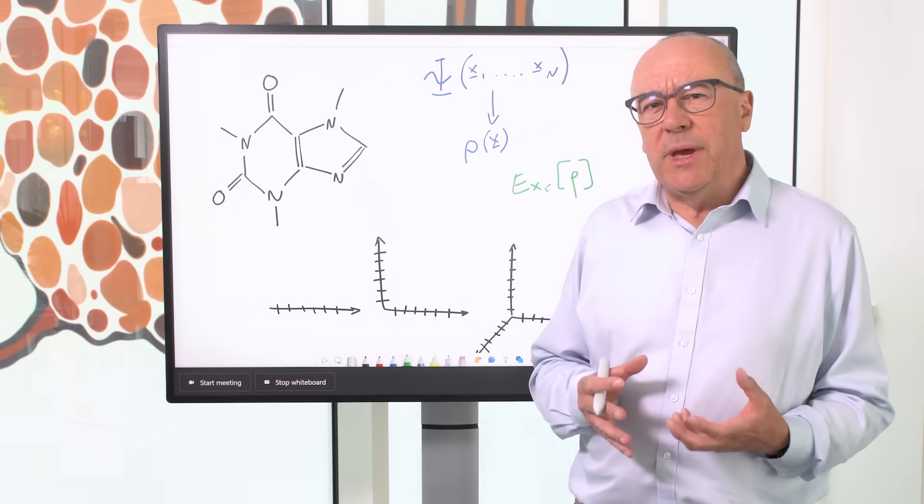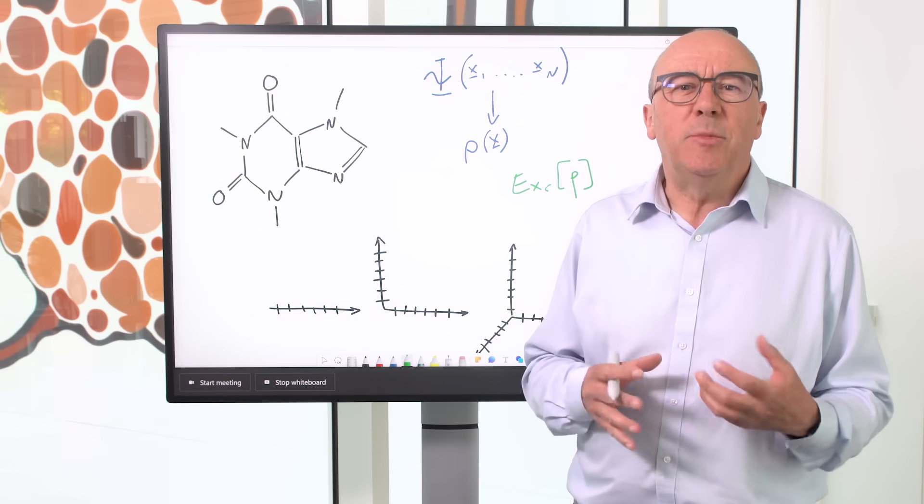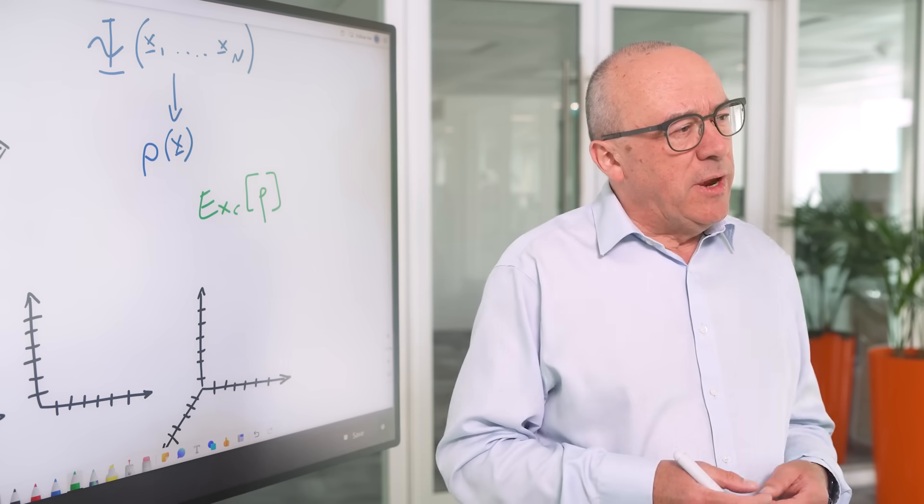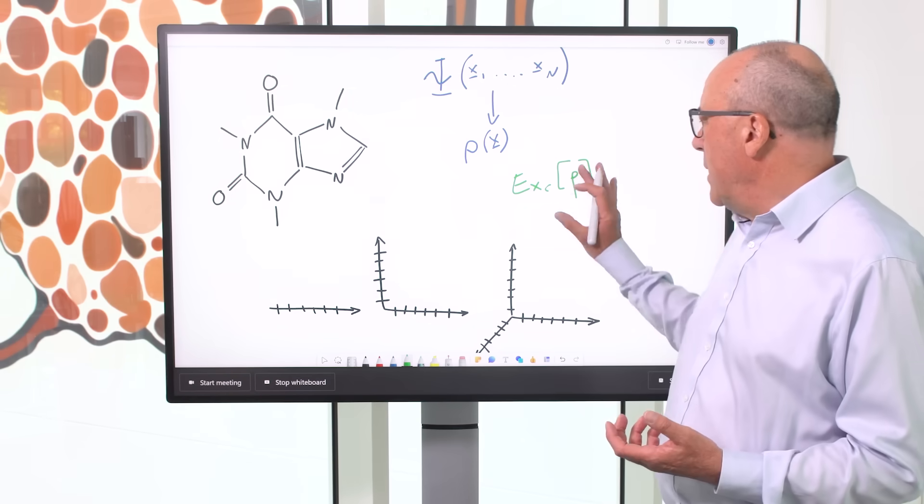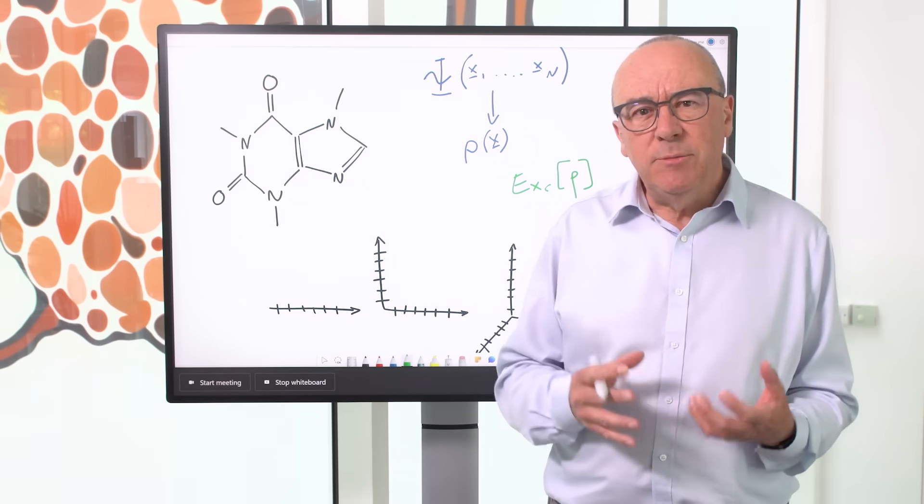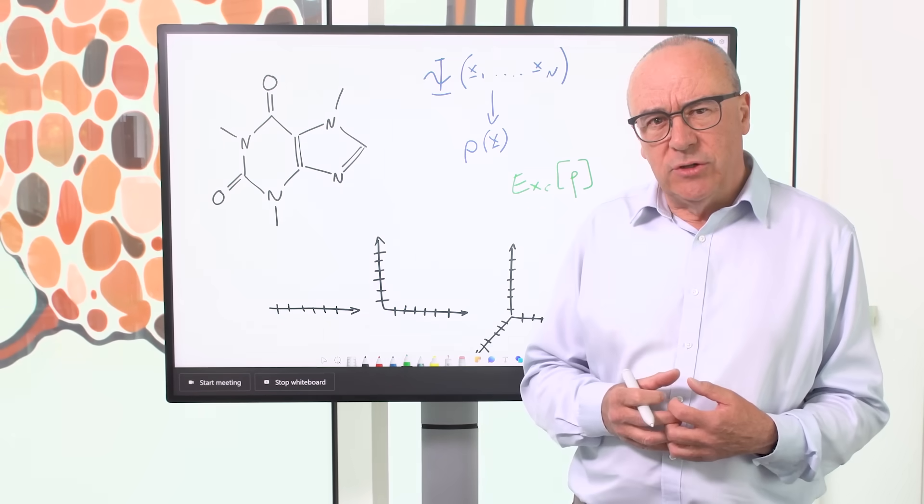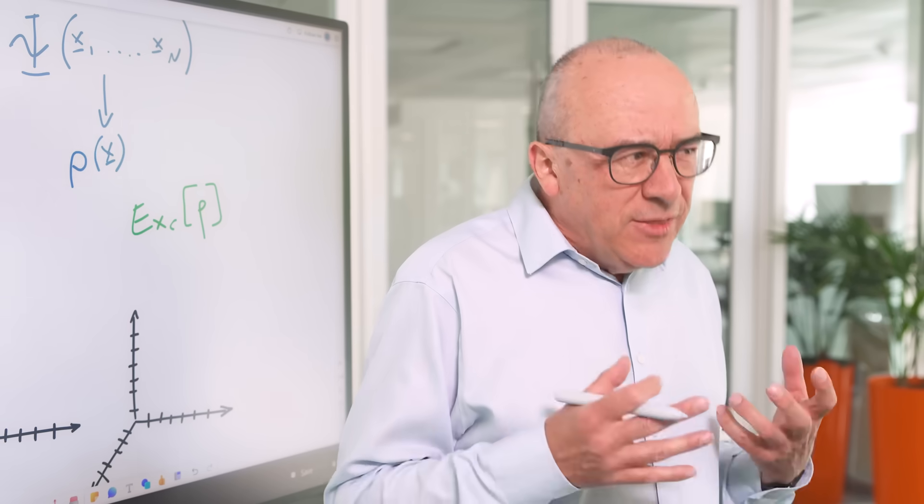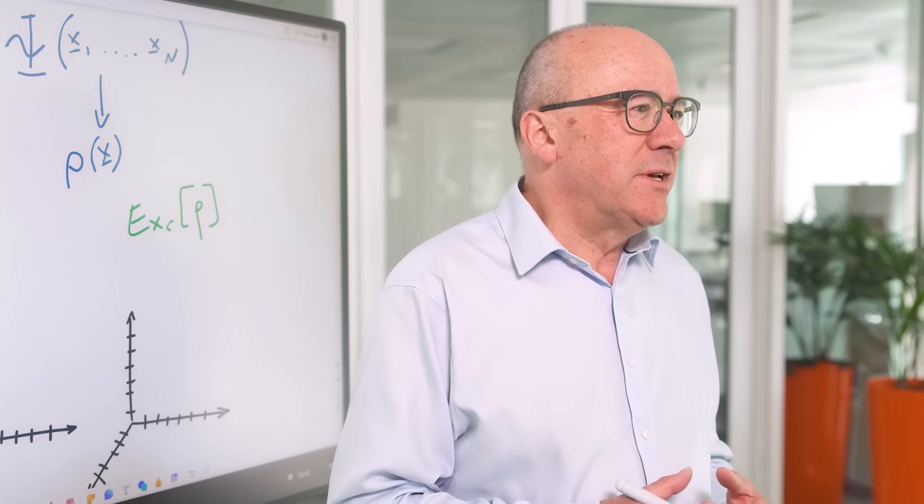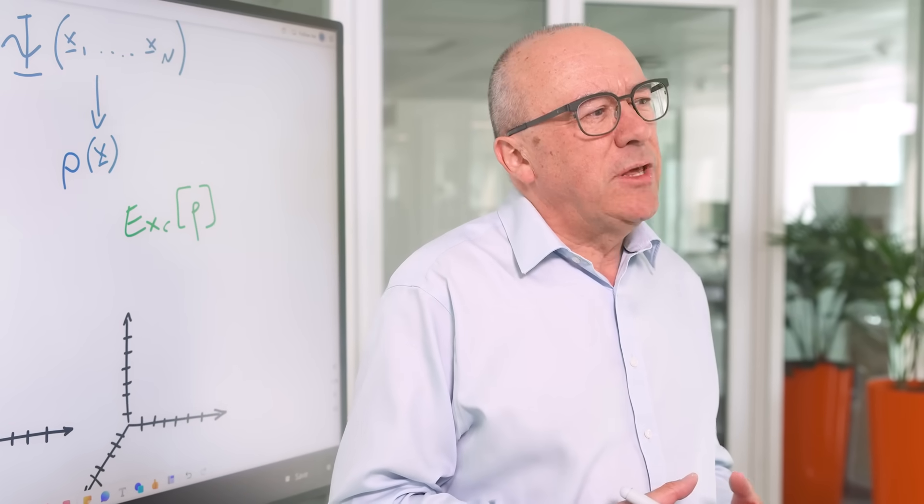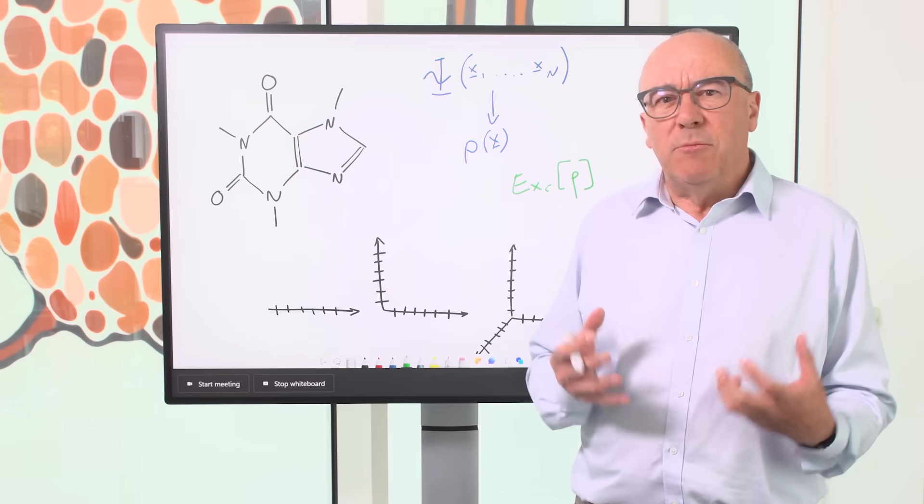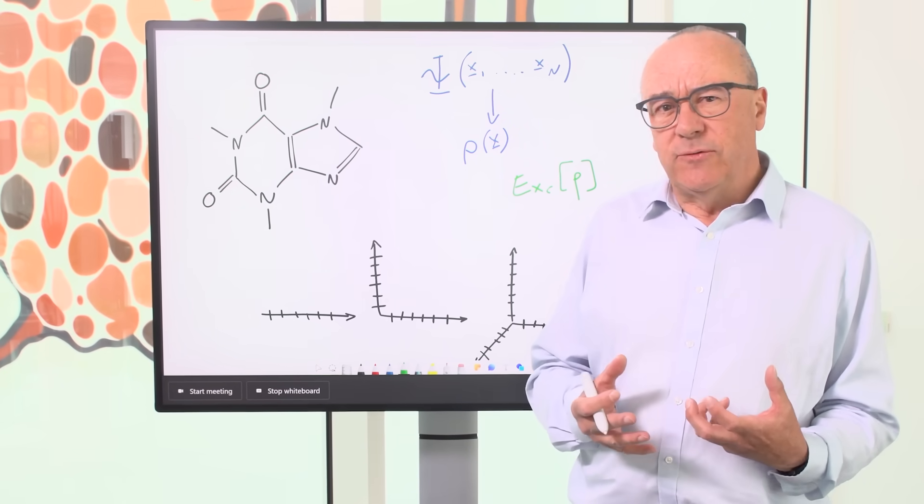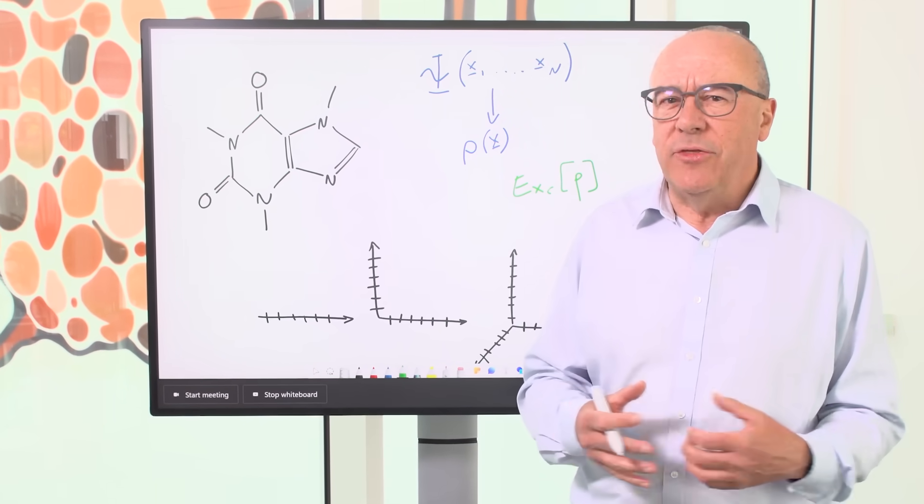That data set is orders of magnitude larger than anything that people have used previously. By using that data set, combined with the power of deep learning, we were able to train the world's first deep learning Exchange Correlation Functional that achieves high accuracy, but without sacrificing speed. This really opened the door to some very exciting possibilities to calculate the properties of materials and molecules in areas like drug discovery or new materials for green energy or many other applications.